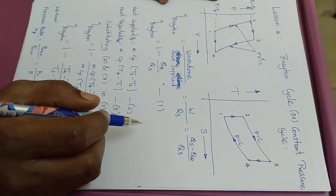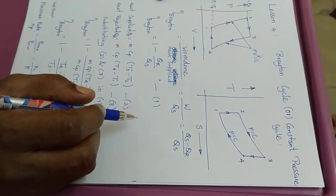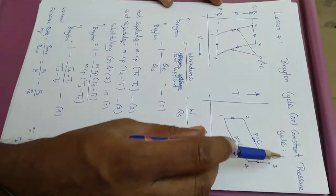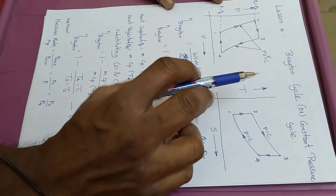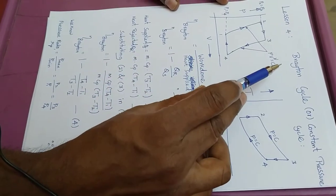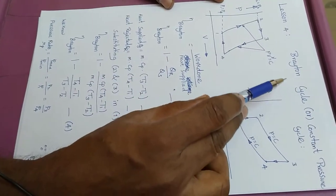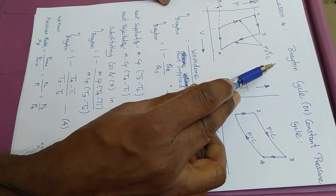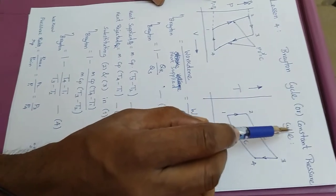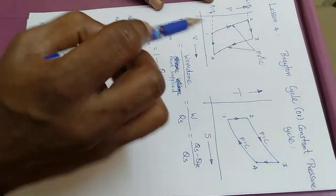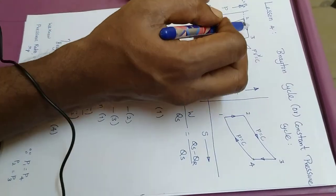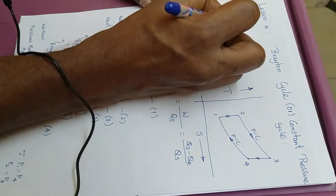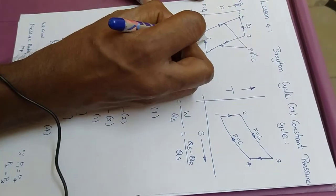Hi students, today we are going to see lesson 4: Brayton cycle, or constant pressure cycle. This cycle is called Brayton cycle because the name of the person who designed the cycle is Brayton. It is also called constant pressure cycle because heat addition and heat rejection takes place at constant pressure.